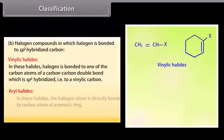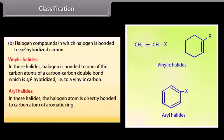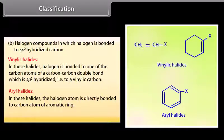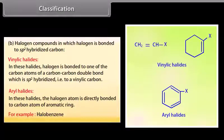Aryl halides: in these halides the halogen atom is directly bonded to a carbon atom of the aromatic ring. For example, halobenzene.